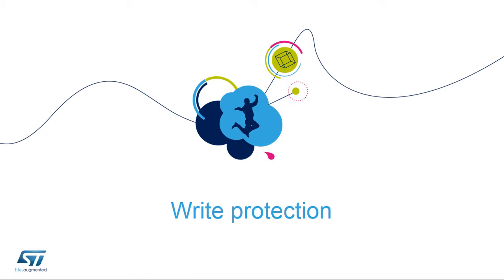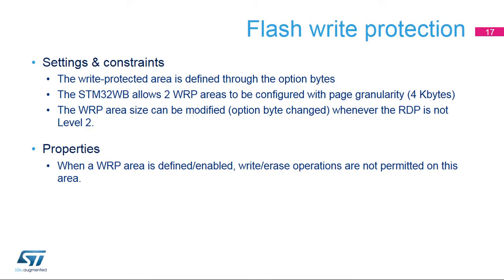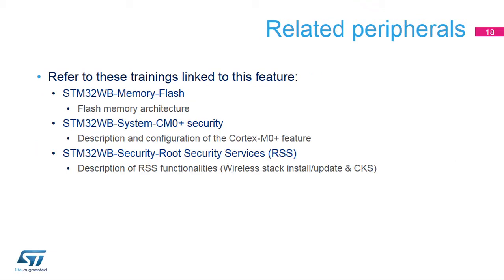Now let's take a closer look at the details of the write protection settings of the STM32WB. The flash memory write protection mechanism is designed to prevent unwanted write access to defined areas in flash memory, such as the bootloader or calibration constants that do not change. The write protection areas are defined through the option bytes. The user can define up to four different write protection flash memory areas independently, two per bank, each defined by a start and end address with a page granularity of 4 kilobytes. The size of the write areas can be modified whenever the RDP level is not set to Level 2. Erase operations are treated as write operations on write-protected areas, meaning they are not allowed.